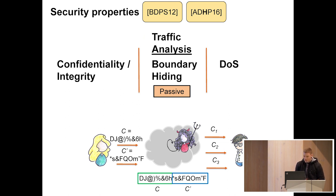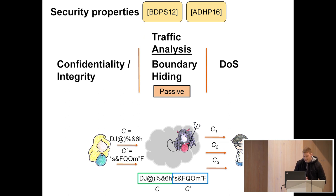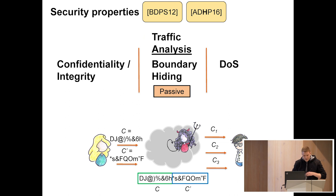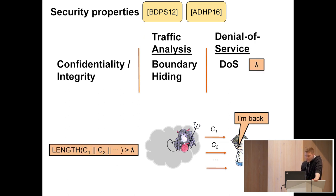Boundary hiding is going to capture security against traffic analysis. It essentially says that if the adversary is given a sequence of ciphertexts, it's impossible for the adversary to delineate the ciphertext boundaries in that sequence. There are two versions: a passive version, where the adversary only has access to the encryption oracle, and an active version, where the adversary also has access to the decryption oracle.